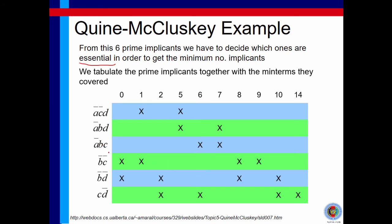So obviously, the fewer variables you have in a prime implicant, the more minterms it will cover. For example, a prime implicant with only 2 variables will cover 4 minterms.